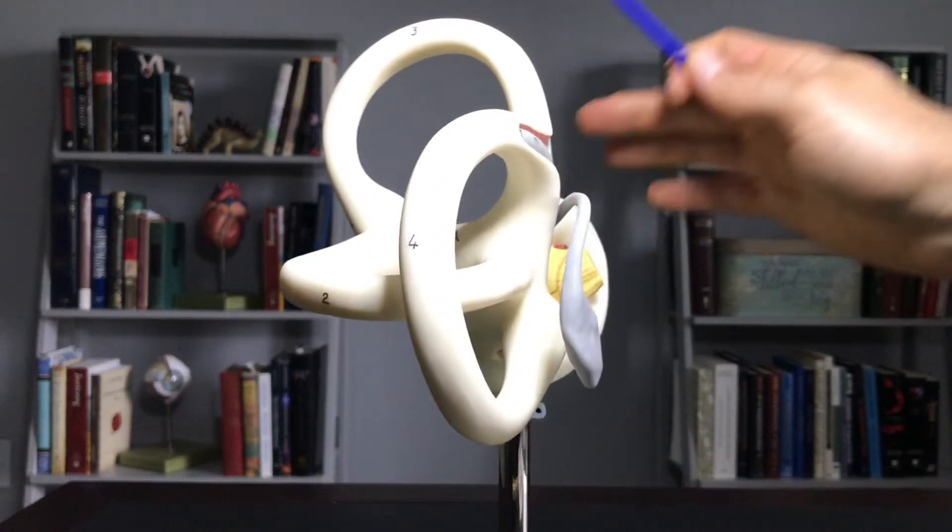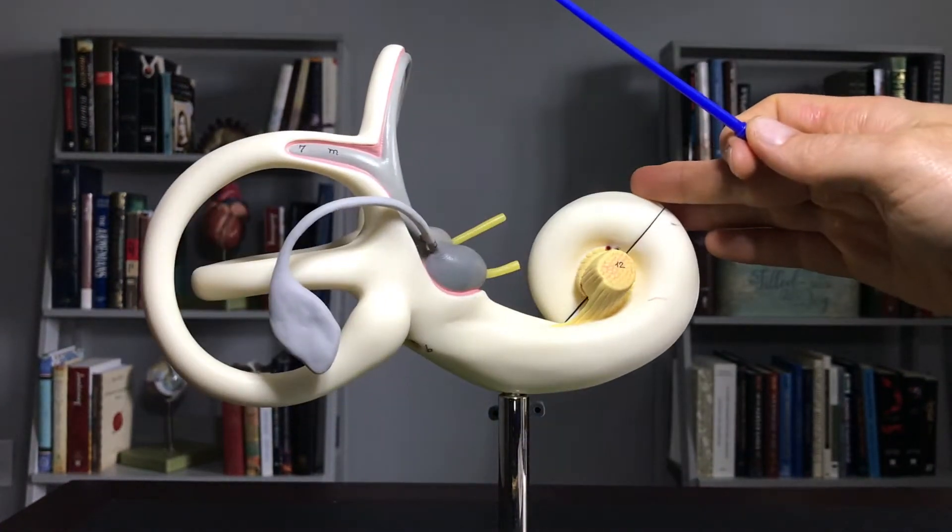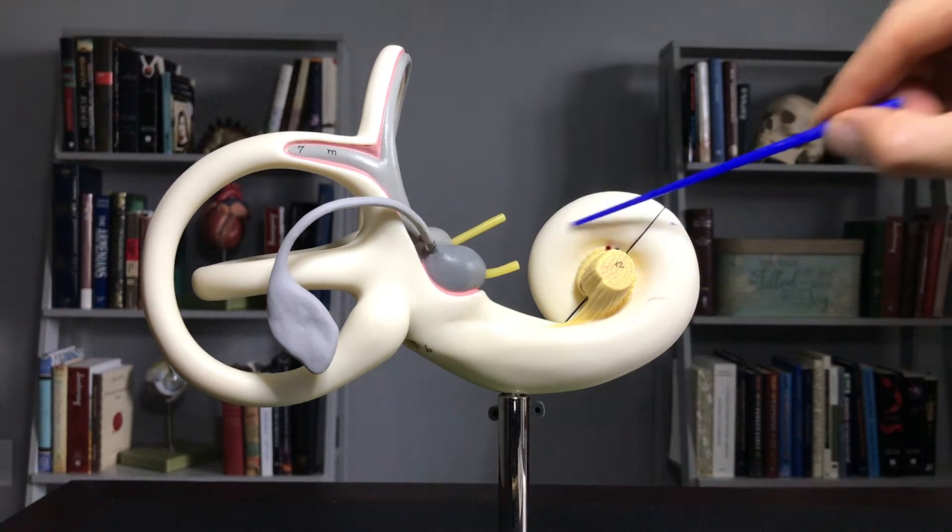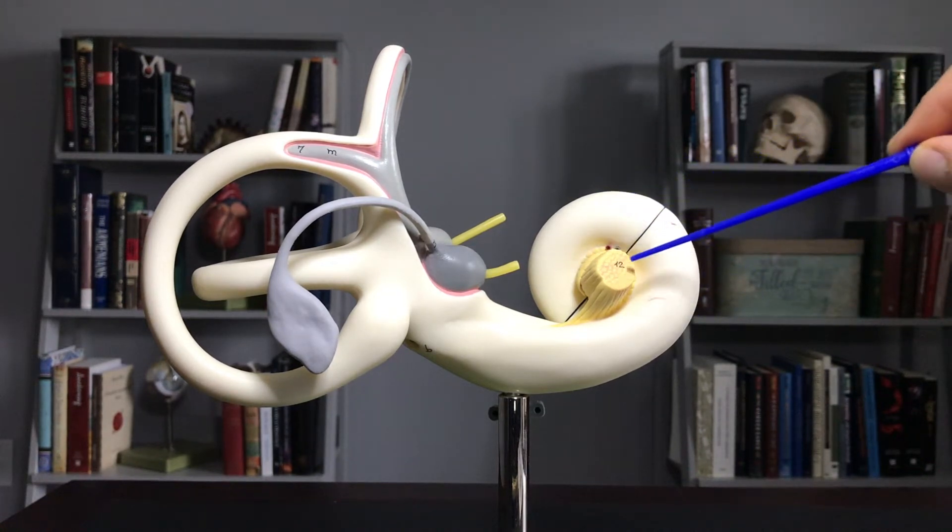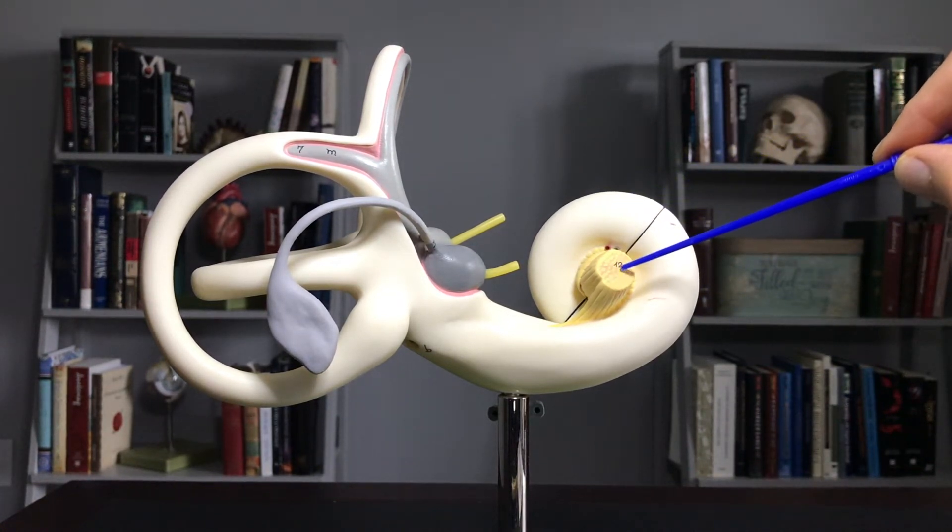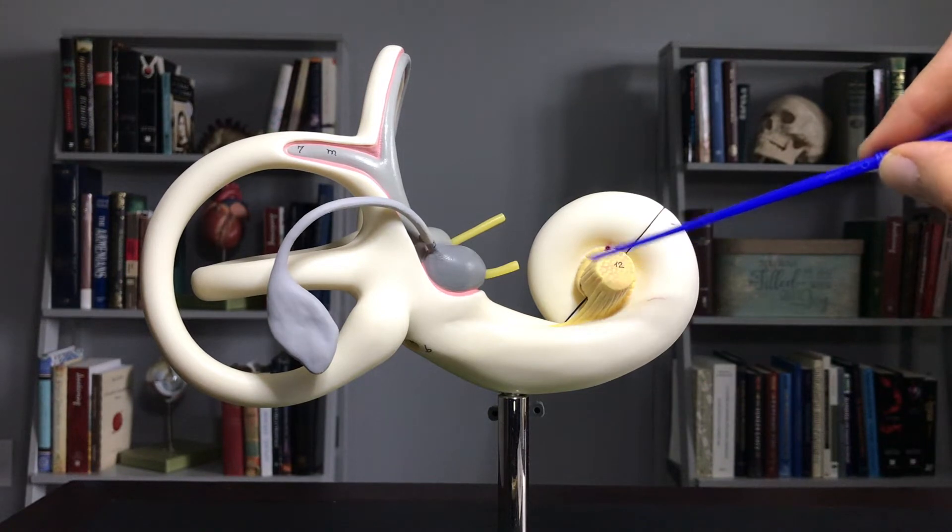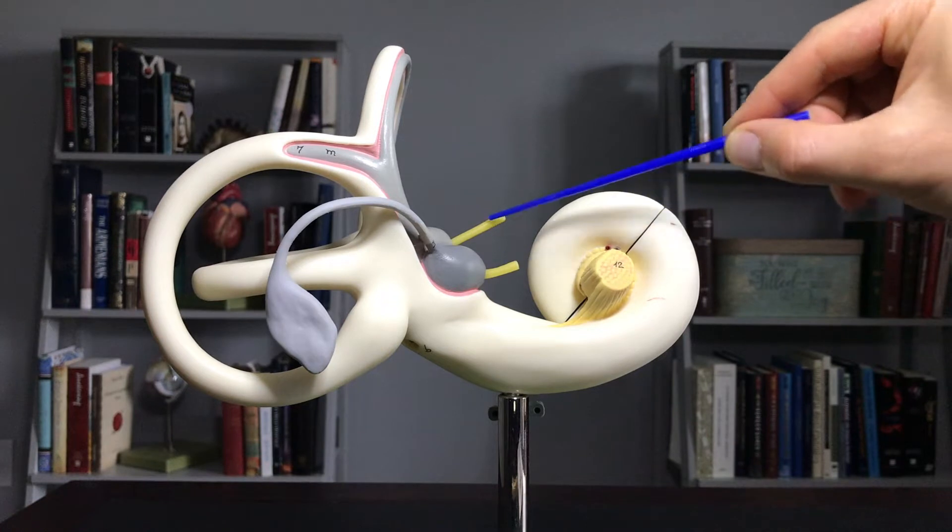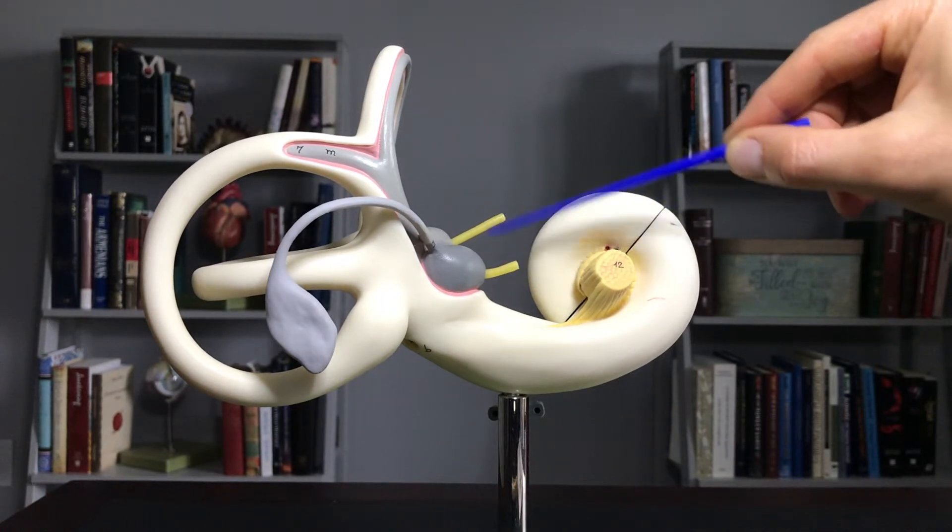If I spin this around, what we see on this side is the base of the cochlea. This is the cochlear branch of cranial nerve number eight. We have the vestibule. You can see this as the vestibular branch of cranial nerve number eight.